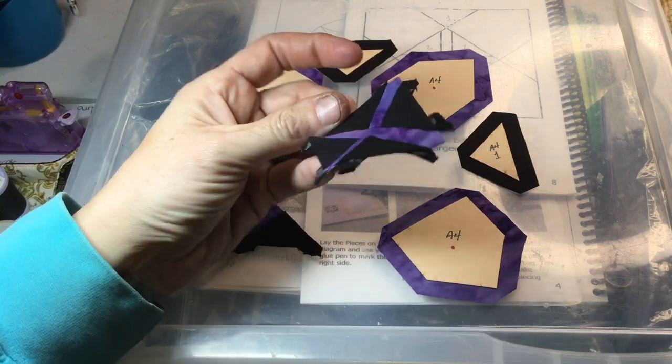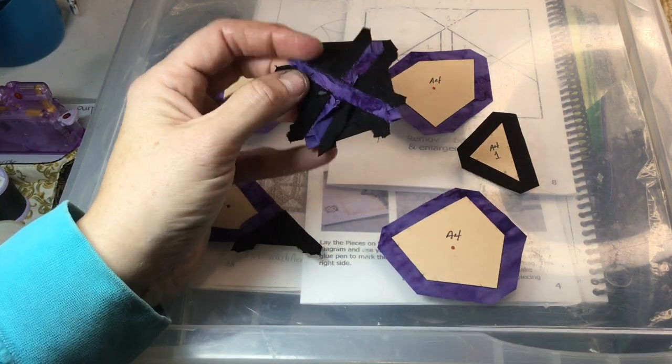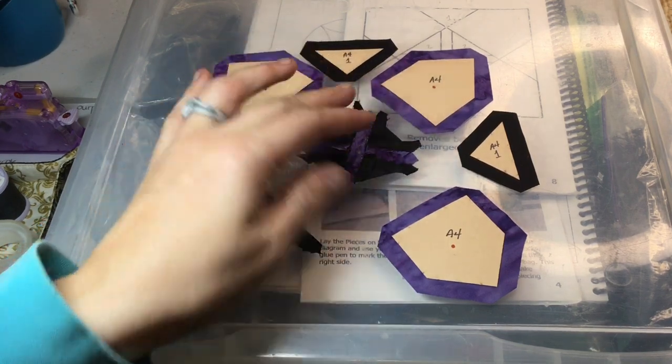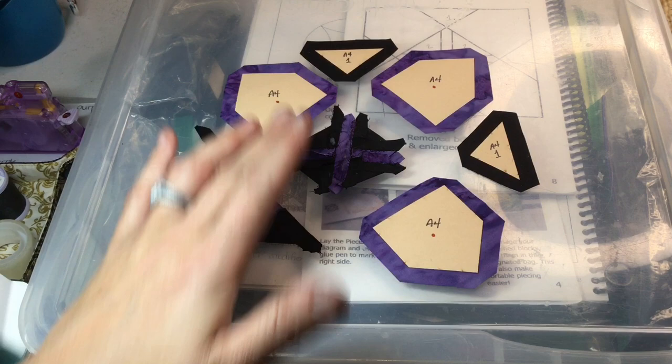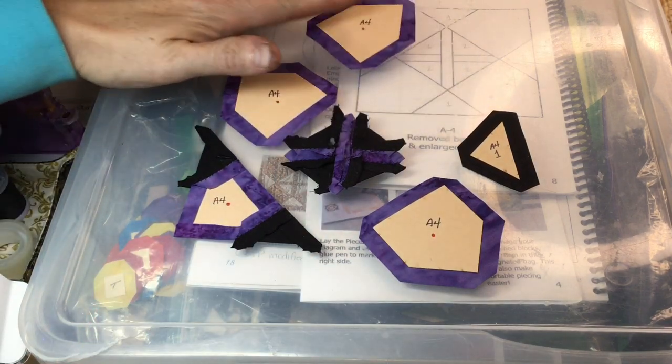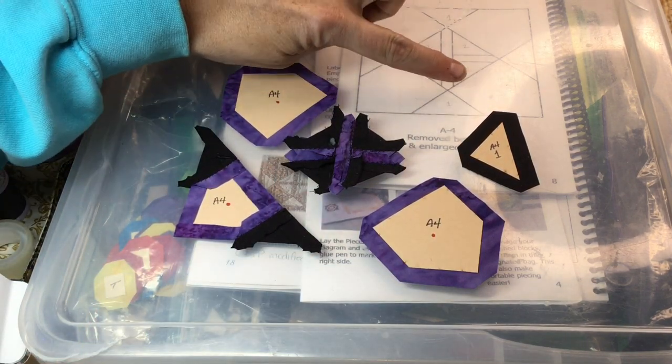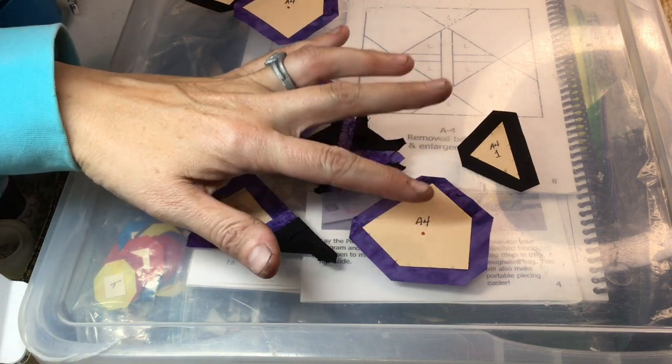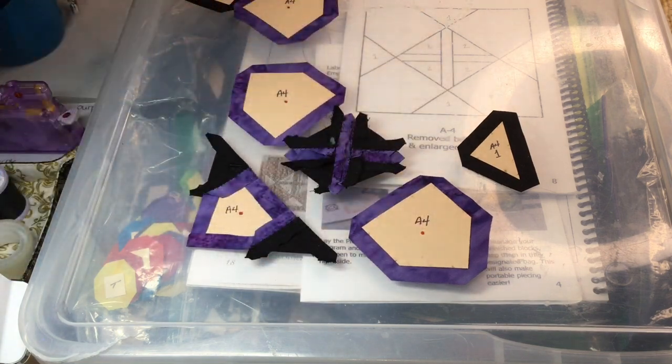I've connected the other unit to the center and it's really wonky, but that's just because we talked about the dimensionality that's going to happen. Now I'm going to attach these end pieces to make this row here and then I can attach it to this other section. I'm going to baste and attach these pentagons.